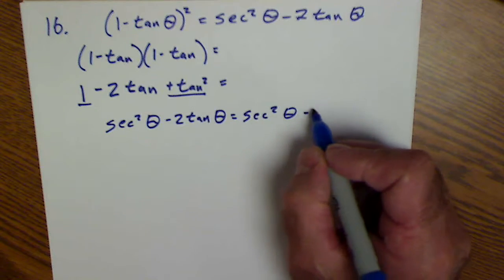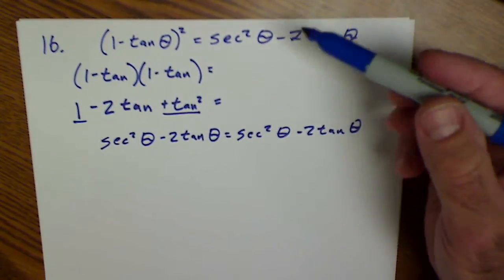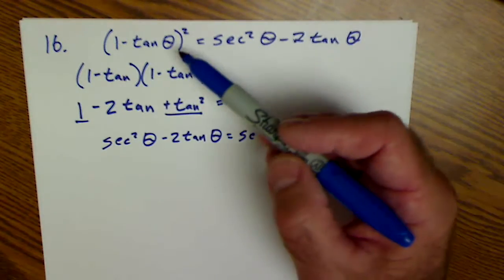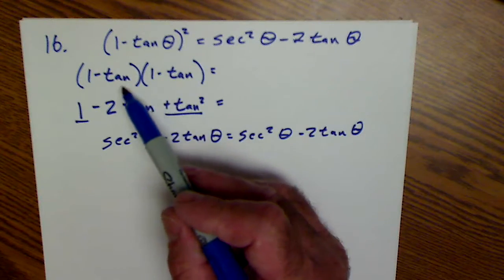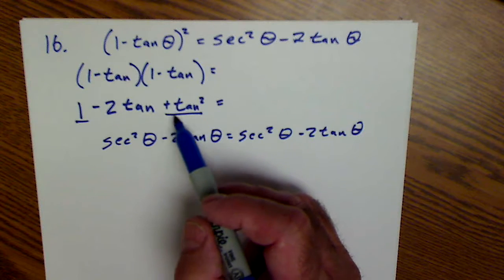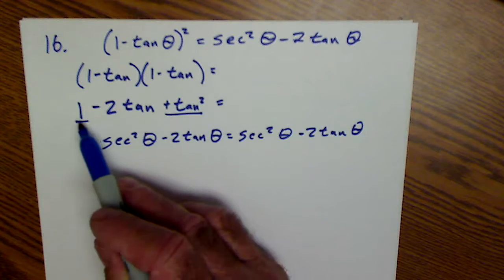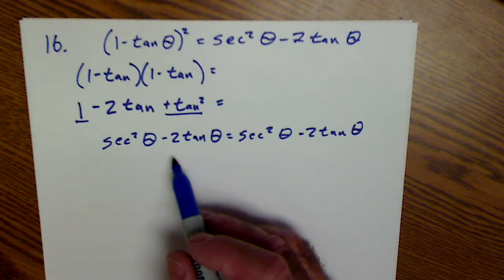So really first thing I did here was figure out which side to work on. Left side is more complicated. I opened it up by FOILing it first, outer, inner, last. And then I used Pythagorean identity to replace this with this. And then it all came together.